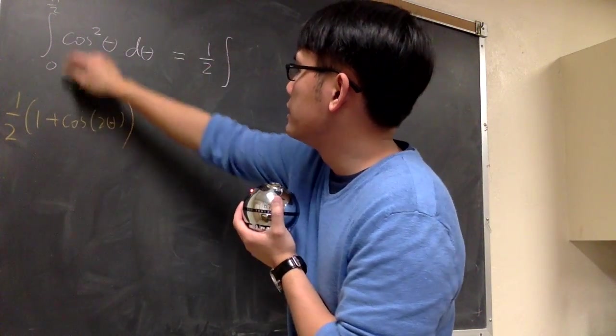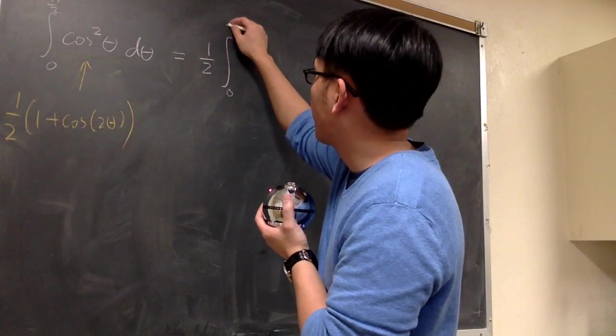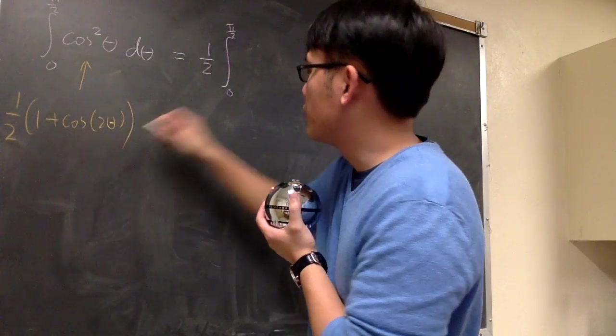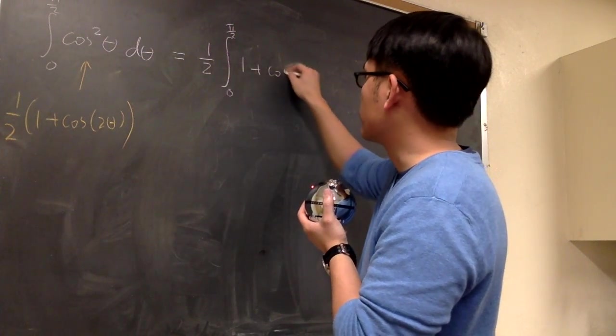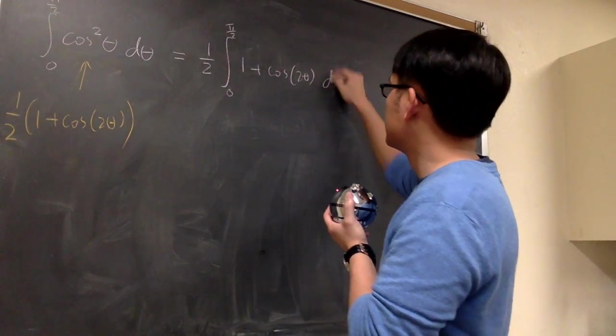1 half integral 0 to pi over 2. And then this right here will be just 1 plus cosine 2 theta d theta.